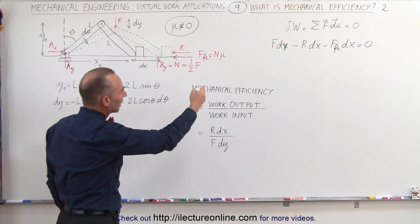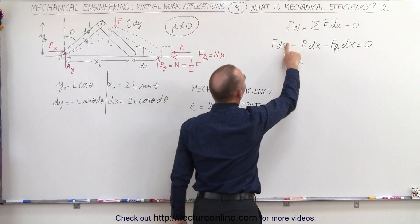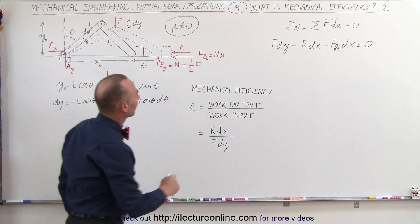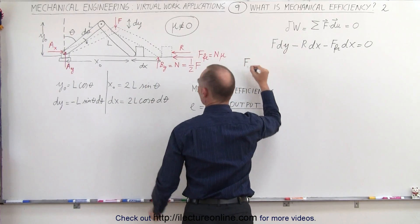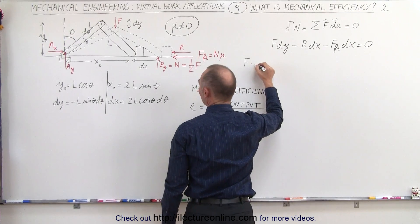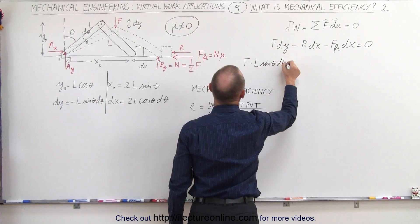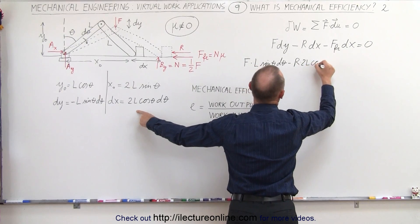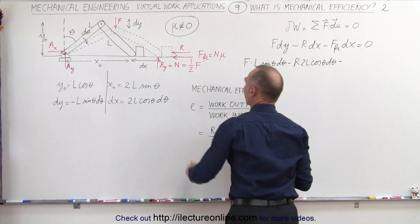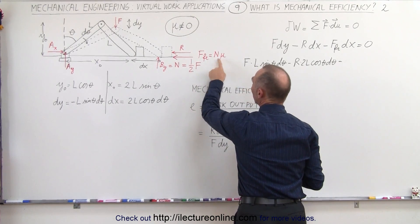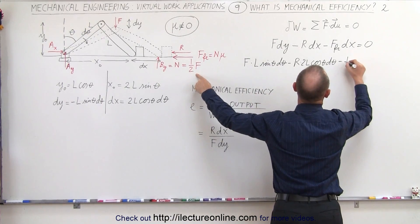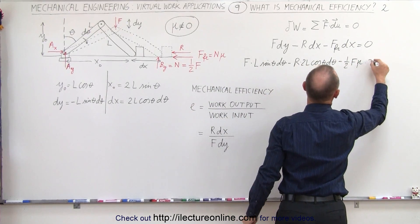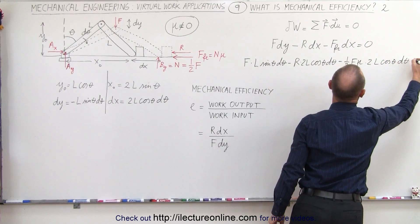The next step is to plug in what dx and dy are equal to. Note that for the f term we need dy, not dx, since it's moving in the y direction. So we get f times dy, and dy is l sine of theta d theta (taking the magnitude). Then minus r times dx, which is 2l cosine of theta d theta. Minus the friction force — which is the normal force times mu, and the normal force is one-half f — so this becomes one-half f times mu times dx, where dx is 2l cosine of theta d theta, and all that adds up to zero.